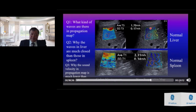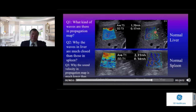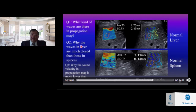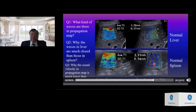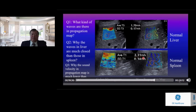The upper image shows normal liver and the lower shows normal spleen — color elastography and wave propagation map. Question 1: What kind of waves appear in the propagation map? The correct answer is transverse (shear) waves. Question 2: Why are the waves in the liver much closer together than in the spleen? Because the shear wave in the liver is 1.7 m/s, which is slower than the 2.3 m/s in the spleen.